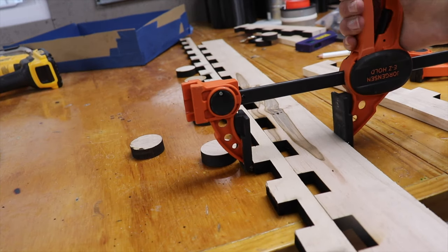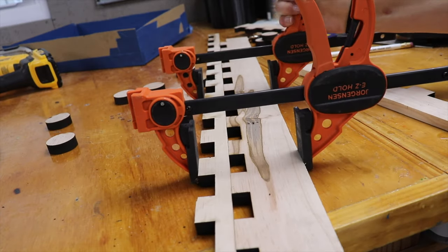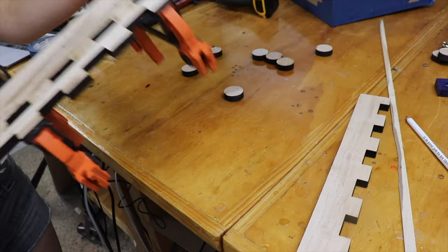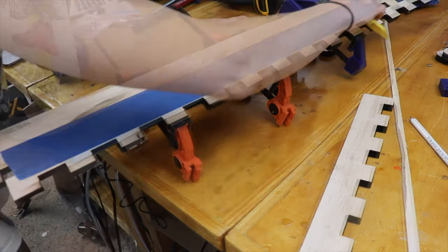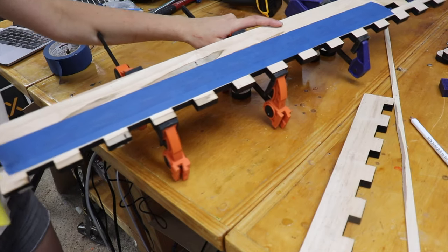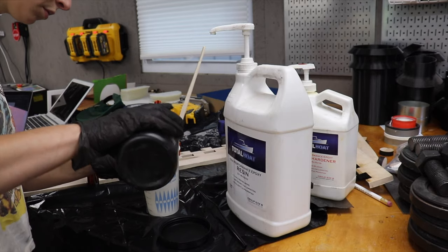I want to fill each of these rectangular gaps with resin but I need it not to ooze out and make a mess on me. My plan of attack was to clamp these two nice and straight strips together and then use the sticky side of a strip of painters tape to firmly press onto the back side of the wood and then I can pour the resin in.